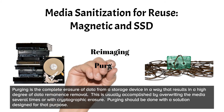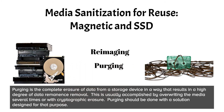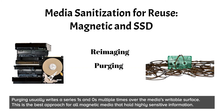Purging is the complete erasure of data from a storage device in a way that results in a high degree of data remnants removal. This is usually accomplished by overwriting the media several times or with cryptographic erasure. Purging should be done with a solution designed for that purpose. It usually writes a series of ones and zeros multiple times over the media's entire writable surface. This is the best approach for all magnetic media that hold highly sensitive information.